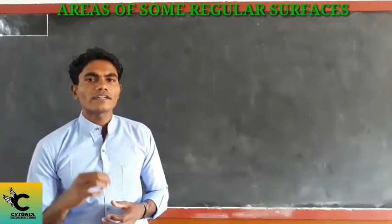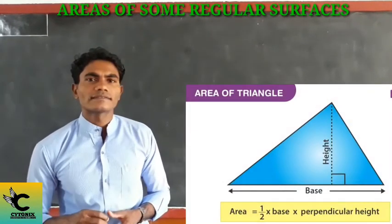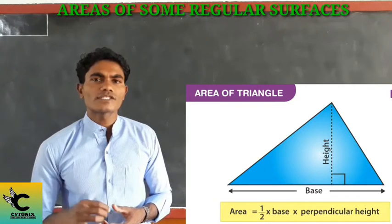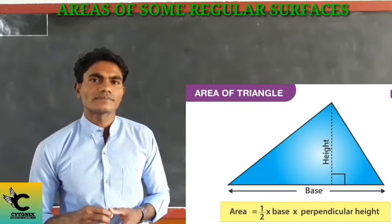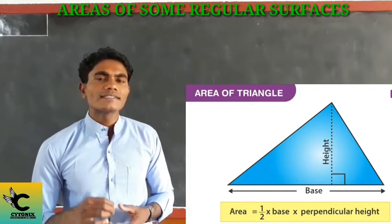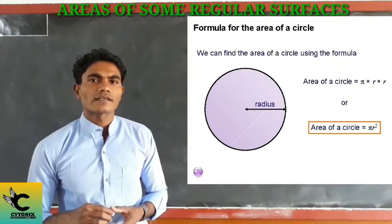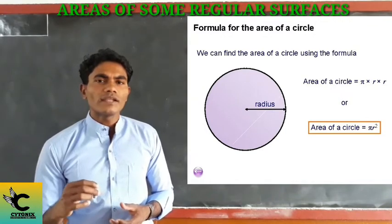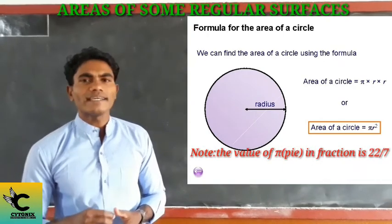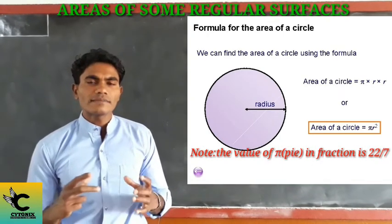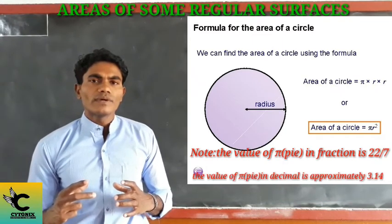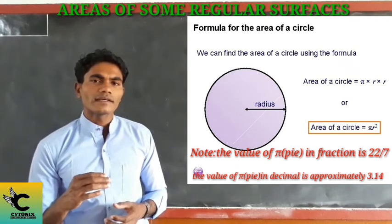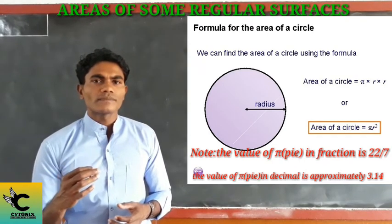Third, the area of a triangle: Area = ½ × base × height, where height is also called the altitude. Fourth, the area of a circle: Area = π × r². The value of π is 22/7 in fraction form, or approximately 3.14 in decimal form.